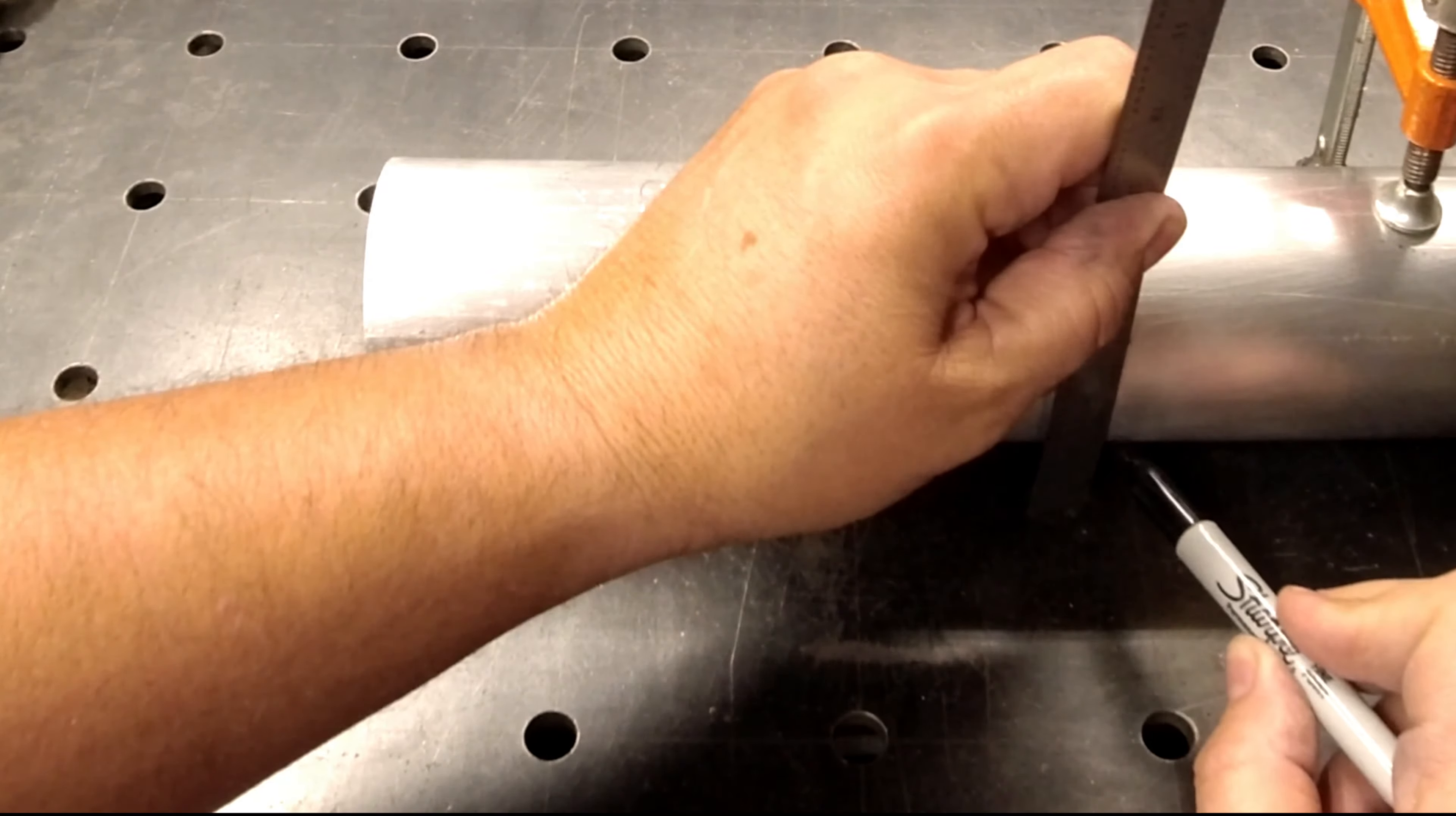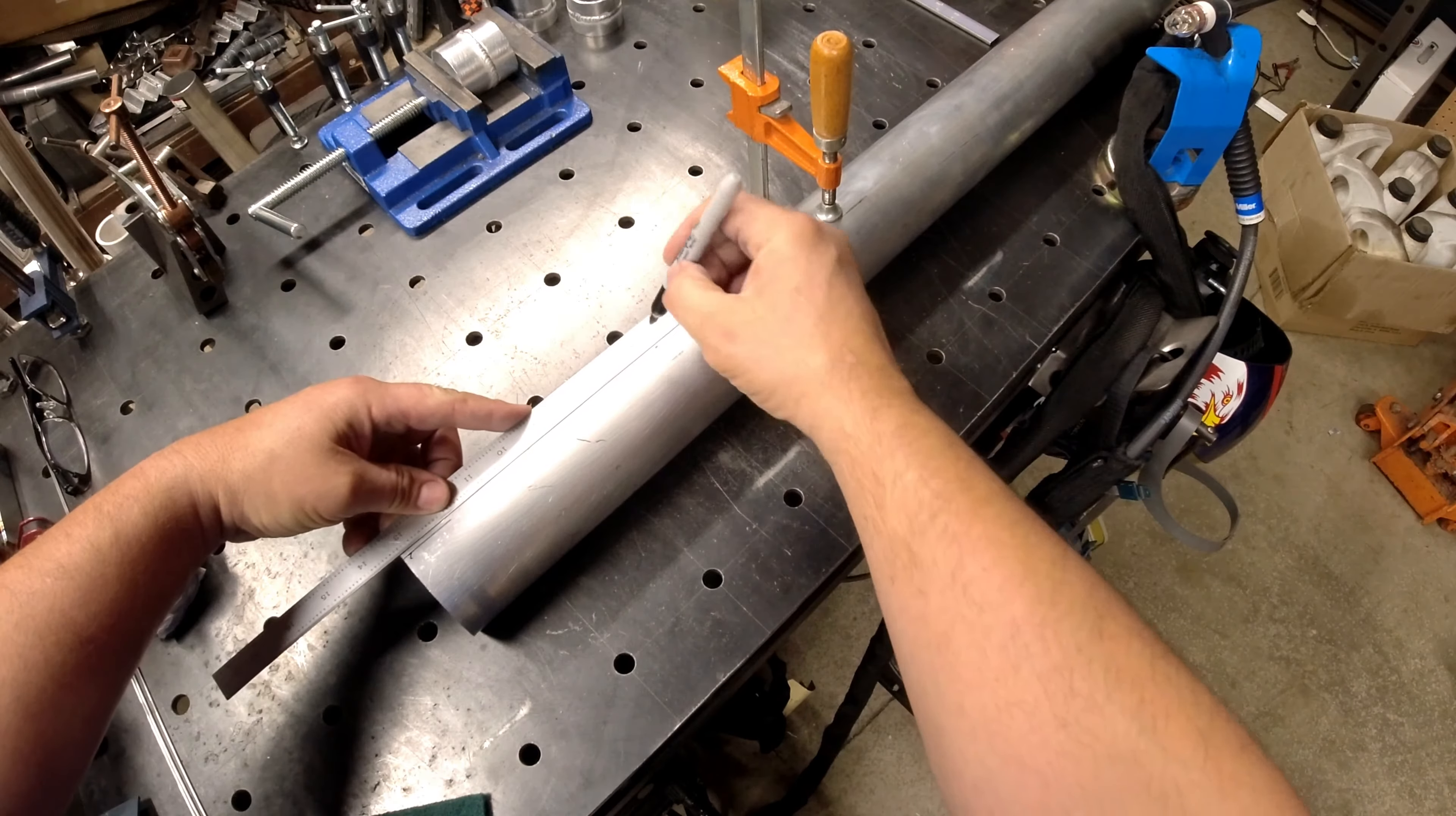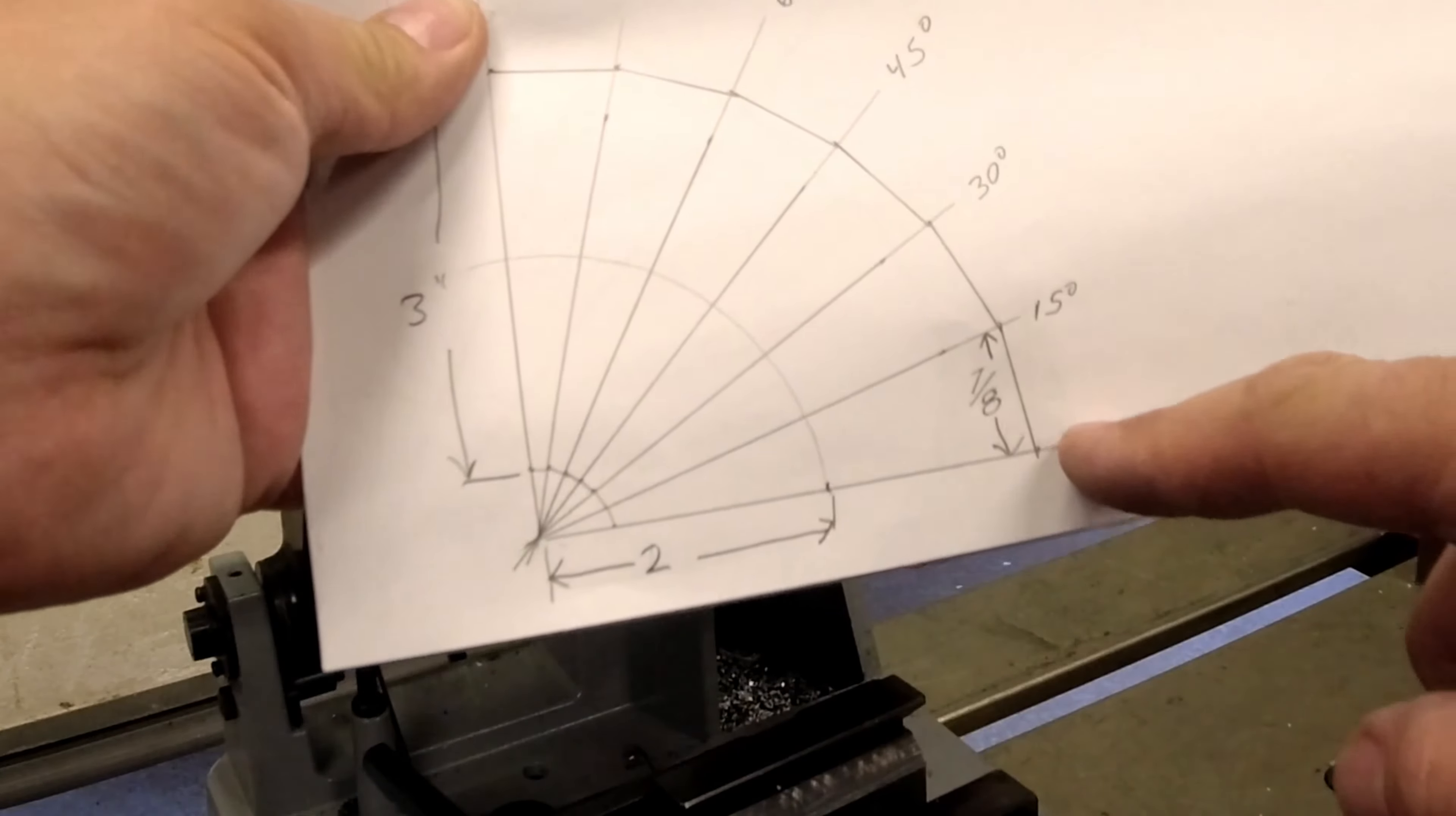And the reason why we do this is so that we can locate the tube after we cut it and everything. So I'm just going to line up on the dots and draw a line.